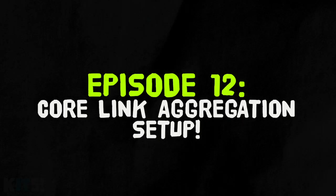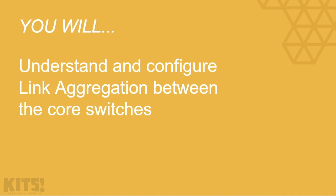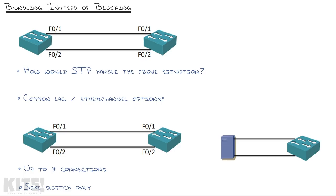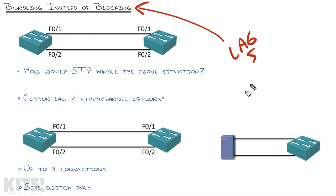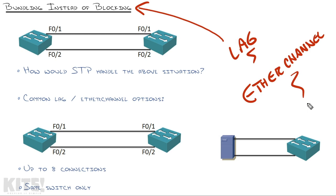Project configuration: setting up core link aggregation. By the time we're done here, you will understand and configure link aggregation between core switches. Let's do a little concept review. LAG is all about bundling instead of blocking. Keep in mind LAG is an industry standard term; Cisco has their own term for it called EtherChannel. And when you're the industry leader responsible for creating a lot of the standards, you get the right to name things whatever you want.